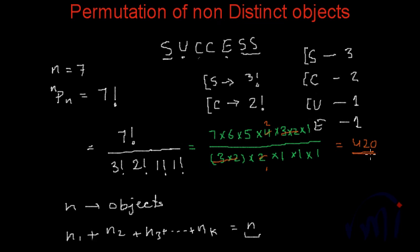So you can actually make 420 different words using these 7 letters where S is repeated 3 times and C is repeated 2 times.